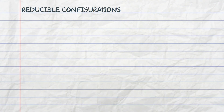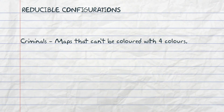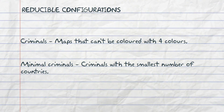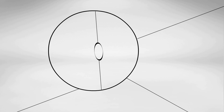So now let's look at reducible configurations. I want to introduce the concept of criminals — and here I don't mean people in jail. A criminal is a map that can't be coloured with four colours. In particular, I want to talk about minimal criminals: among all the maps that can't be coloured with four colours, the ones with the smallest number of countries are minimal criminals. The Four Colour Map Theorem is equivalent to proving that minimal criminals don't exist.